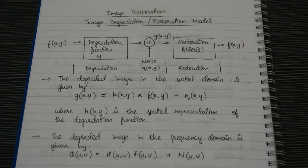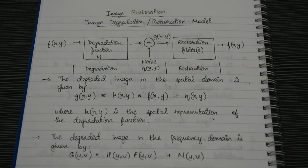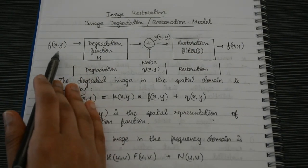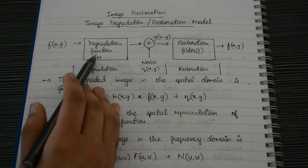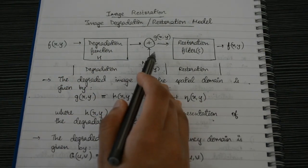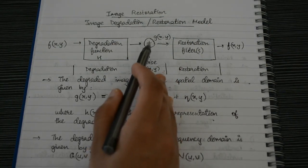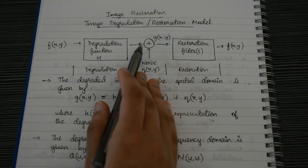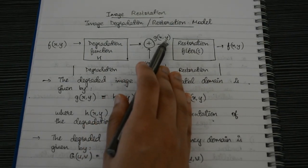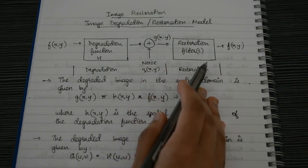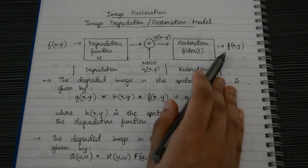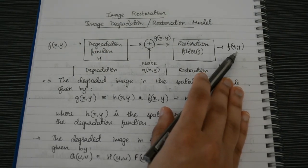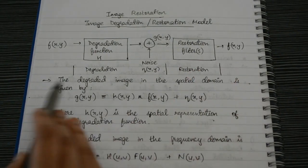Image denoising is the process of removing or reducing the noise content of an image. Now let's understand the diagram. We have f(x,y) as our input image. It is degraded using a degradation function h, and then noise η(x,y) is added to the original image, making it g(x,y). After that, using some restoration filters, the image is restored back to its original state.